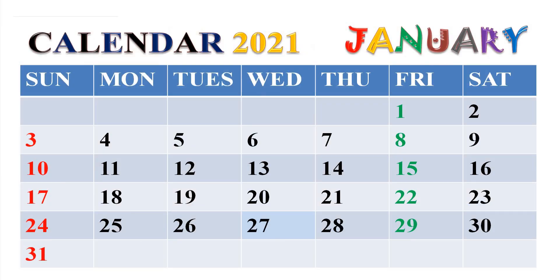A calendar is a system of organizing days purposely. This is done by giving names to periods of time, typically days, weeks, months, and years.